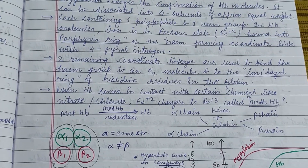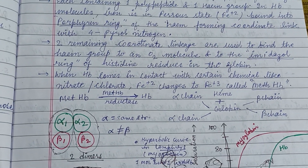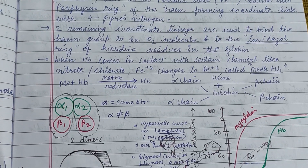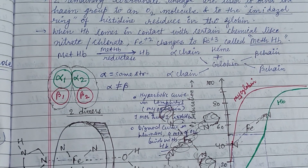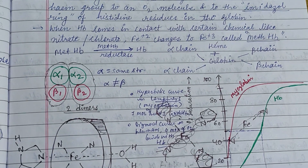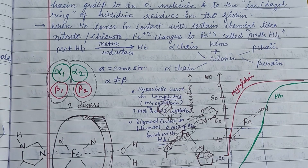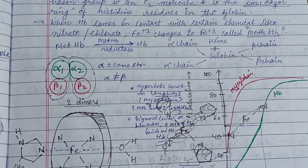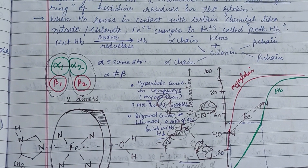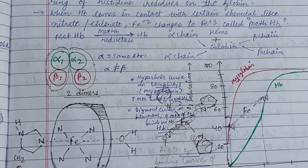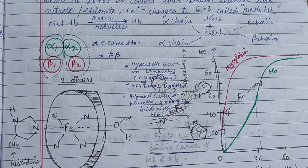The two dimers are connected by salt bridges and weak bonds, except that the two beta subunits do not touch each other. The heme group forms a coordinate link with four pyrrole nitrogens of the porphyrin ring. When hemoglobin comes in contact with certain chemicals like nitrate or chloride, Fe²⁺ changes to Fe³⁺, forming methemoglobin, which is then dissociated back into hemoglobin with the help of methemoglobin reductase.